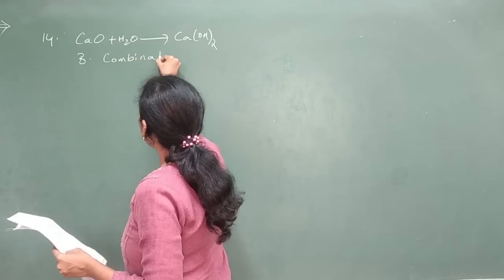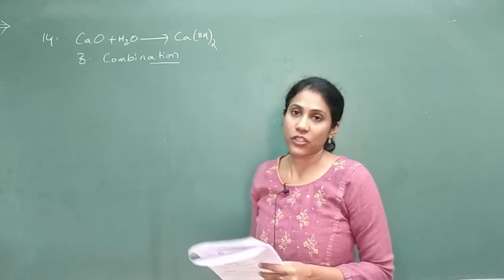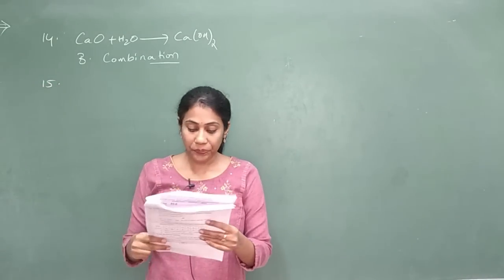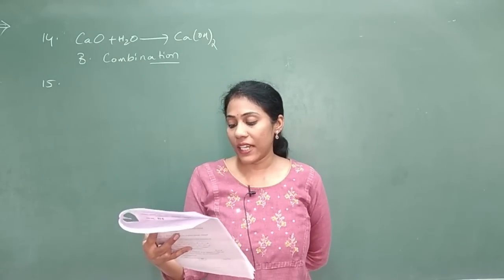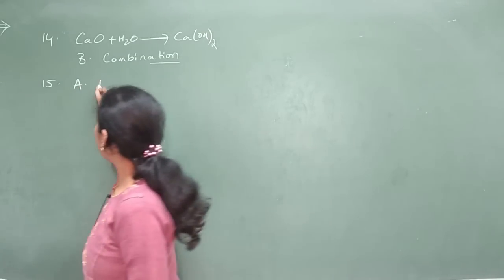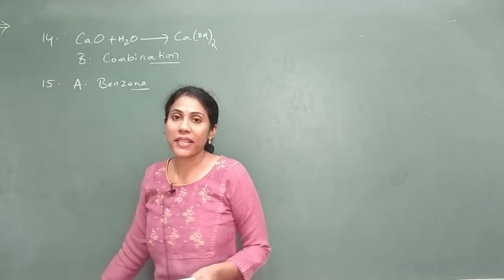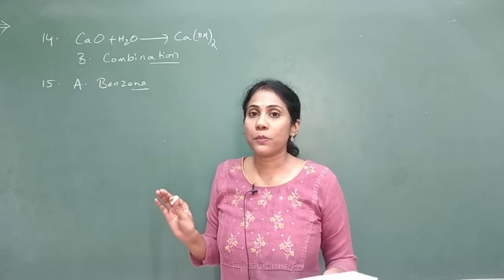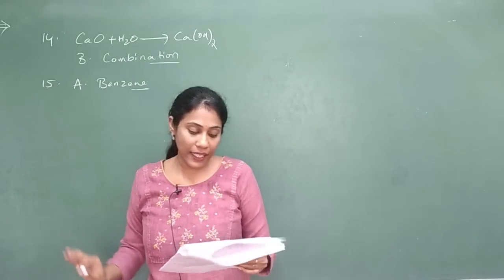Question 15: among the given structures, which is an unsaturated carbon compound? Option A shows the structure of benzene. If you look carefully at benzene's structure, between carbon atoms there is a double bond. Whenever you have double bonds between carbon atoms, you can confirm it is an unsaturated hydrocarbon.